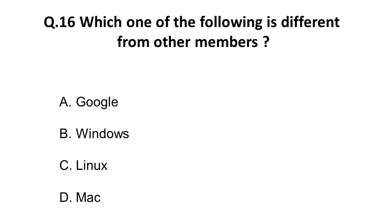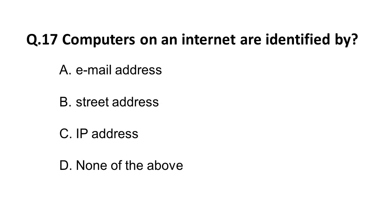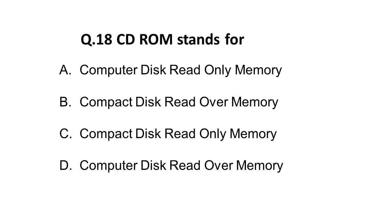The seventeenth question: computers on the internet are identified by what? They are not identified by email — email is for individuals and you can open the same email on any laptop, desktop, or mobile. But the IP address for a computer is a unique ID, so computers are identified by IP address. The eighteenth question: CD-ROM stands for Compact Disc Read-Only Memory. I hope you have answered this correctly.